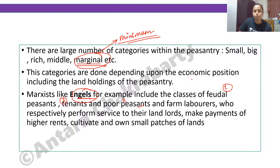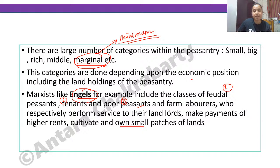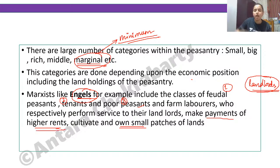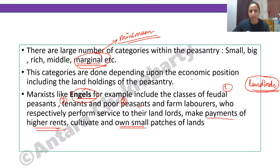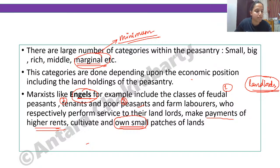Now from the Marxist tradition — Engels gave some categories. Number one: feudal peasants, who perform service to their landlords — like zamindars in India. Number two: tenants, who pay higher rents — they take the land on rent, just like we pay rent for a house. Number three: poor peasants and farm laborers who own small patches of land and cultivate mainly for their own consumption.